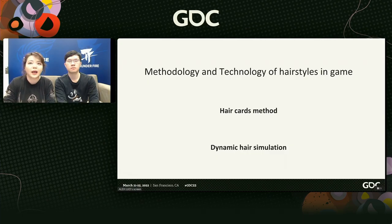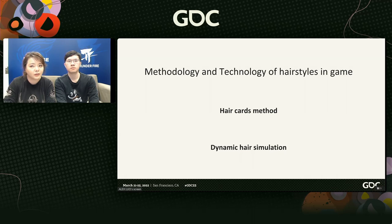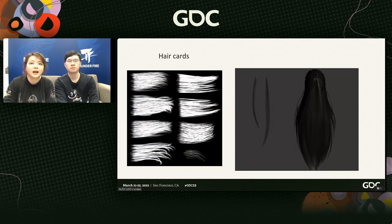Moreover, the biggest similarity in the game industry is the application of technology. No matter which project, the main way to make in-game hair is the hair card method. With hardware improvement, some game developers also use dynamic hair simulation to present better dynamic effects. The hair card method is the most widely used practice in the game industry. The vast majority of in-game hairstyles use this technique to create hair.